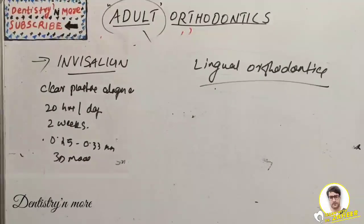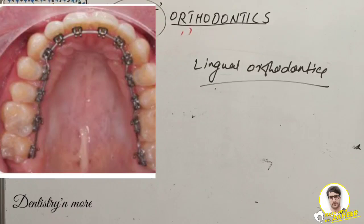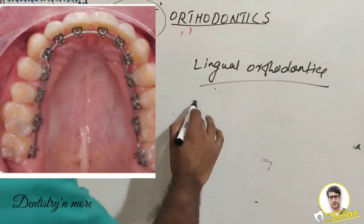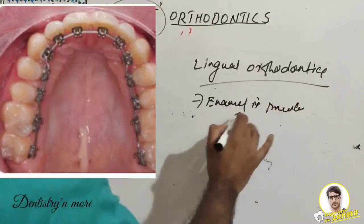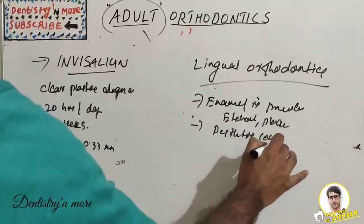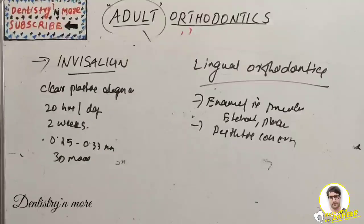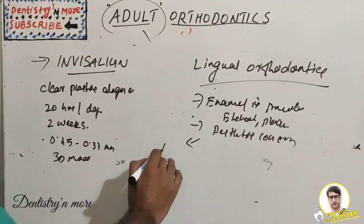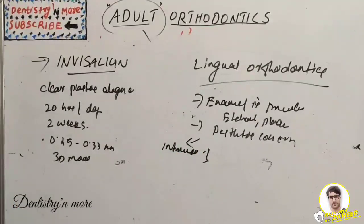Lingual orthodontics is mostly used by adult patients due to aesthetic concerns. Advantages include preservation of the labial enamel surface, preventing permanent decalcification from etchant and plaque accumulation. It allows easy access for routine oral hygiene, and tooth positions can be easily assessed since the labial surface is free of brackets. Lingual appliances are particularly effective for intrusion of anterior teeth and maxillary arch expansion.